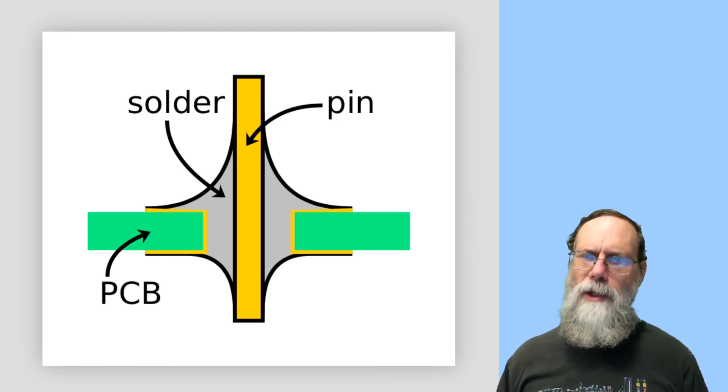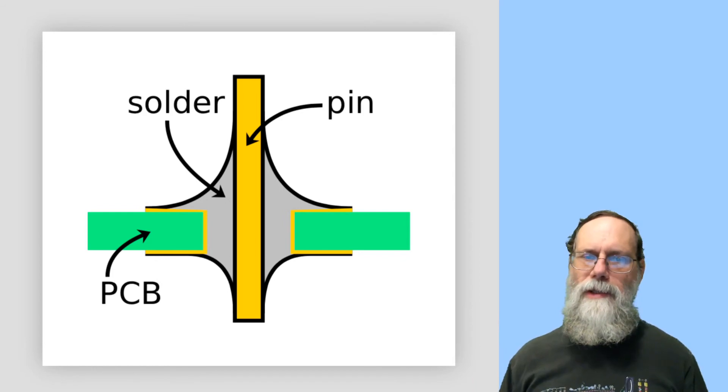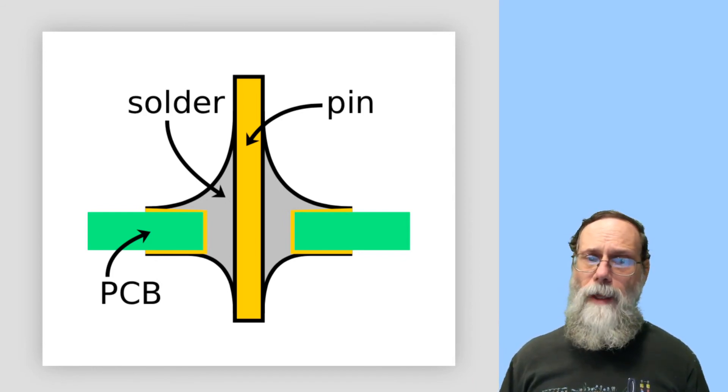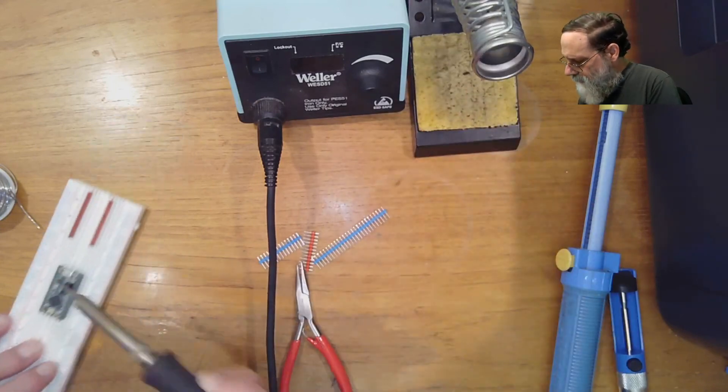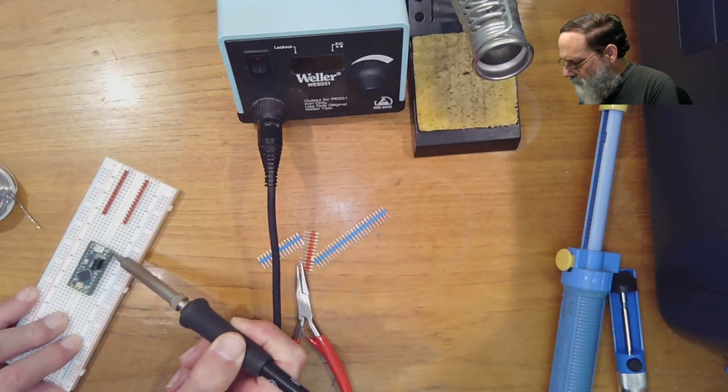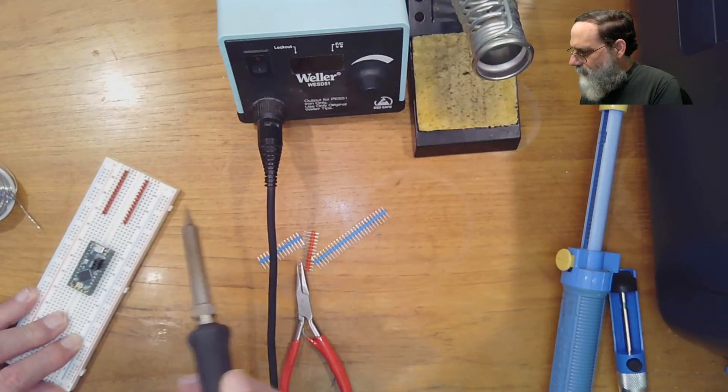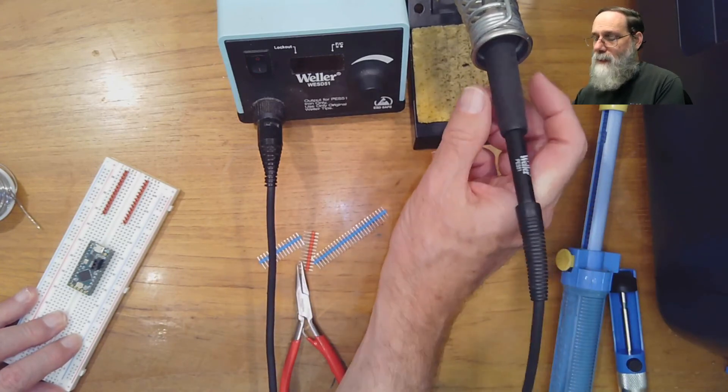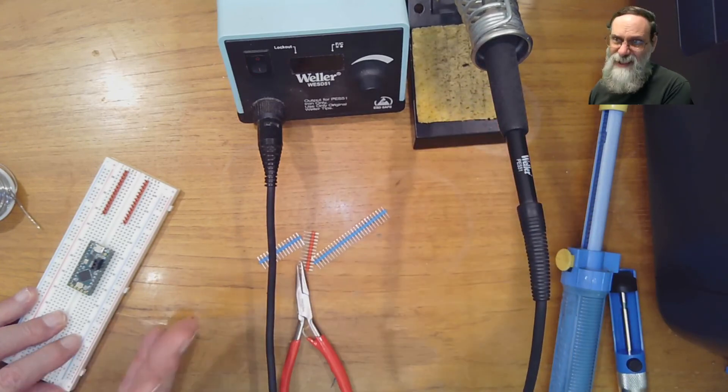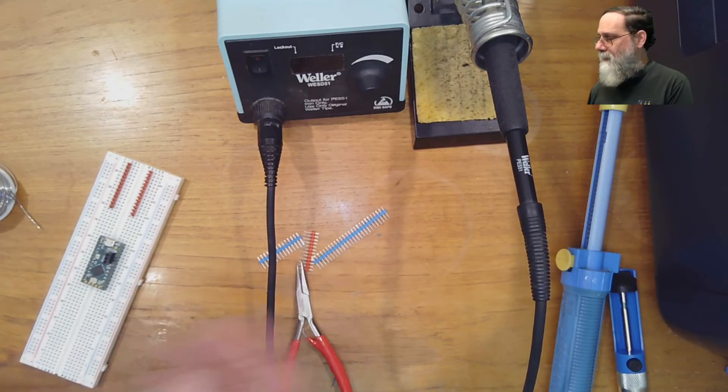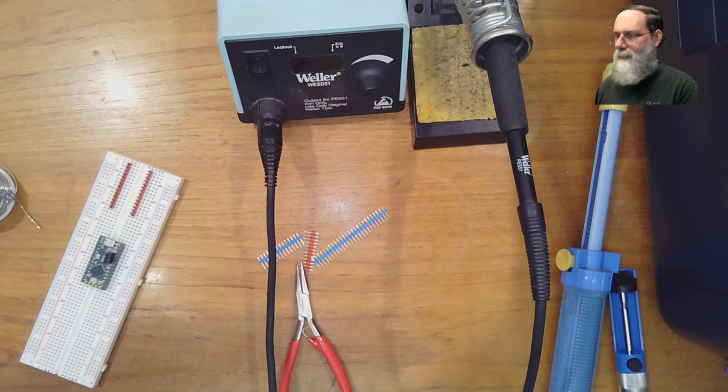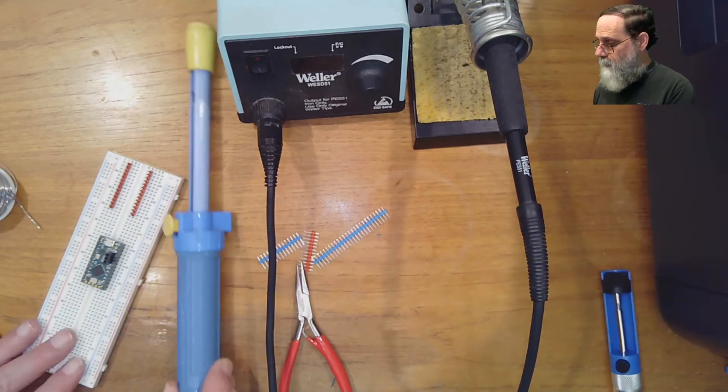If you do get too much solder on the pin and you get a blob instead of the nice meniscus, you can remove some of the solder. There's a couple different ways to do it. One of them is just to take the soldering iron, press it against the pin, and then to try to shake off the excess solder. That sometimes works. If you've got just a tiny bit of excess, that's sometimes just heating it up with the iron and getting it to flow onto the iron is often enough.